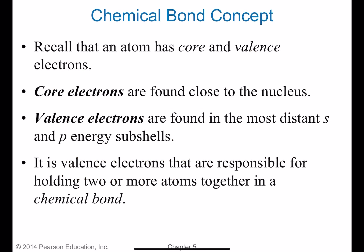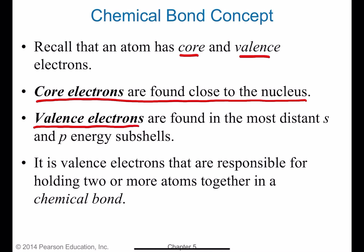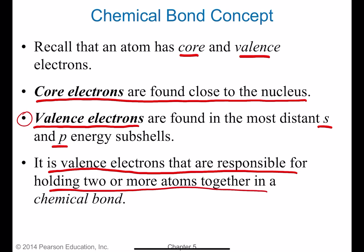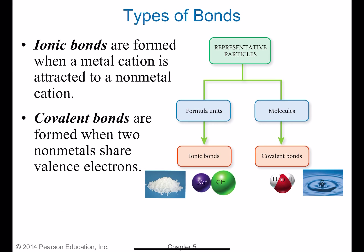Recall the distinction between core and valence electrons. Core electrons are found close to the nucleus and do not participate in chemical bonding. Valence electrons are in the outermost energy level — in the S and P subshells — and they do participate in chemical bonding. It is the valence electrons that are responsible for holding two or more atoms together in a chemical bond, which is why we are always interested in valence electrons.